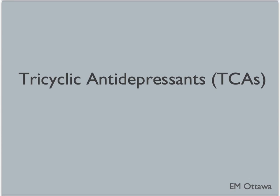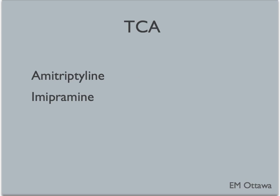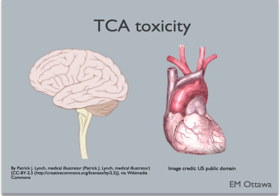First, we will discuss tricyclic antidepressants, or TCAs. TCAs include medications such as amitriptyline or imipramine. They are mostly used to treat anxiety and other psychiatric illnesses. TCA overdose has a few different effects on the body. Their main toxicity affects the neurological and cardiovascular systems.